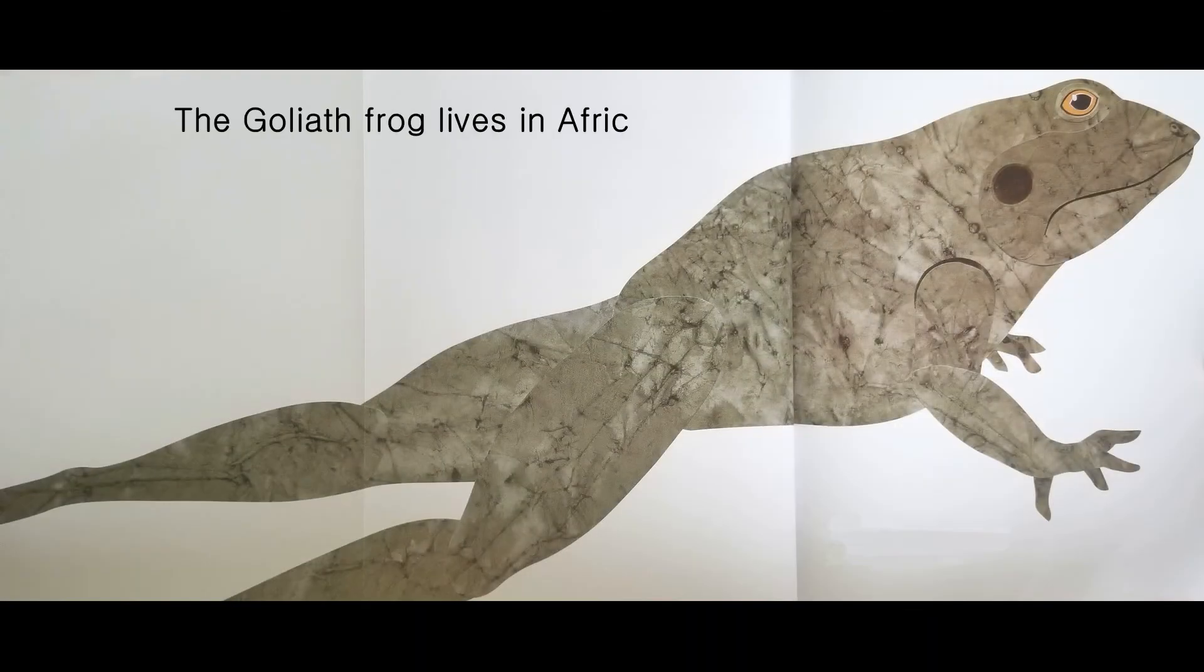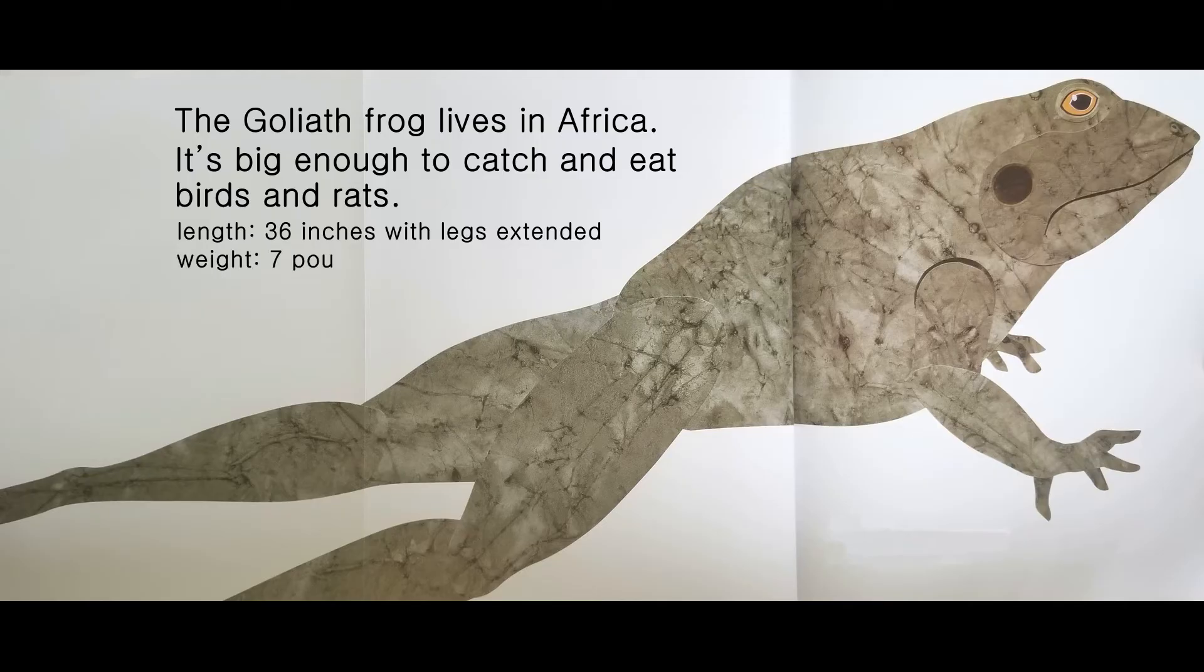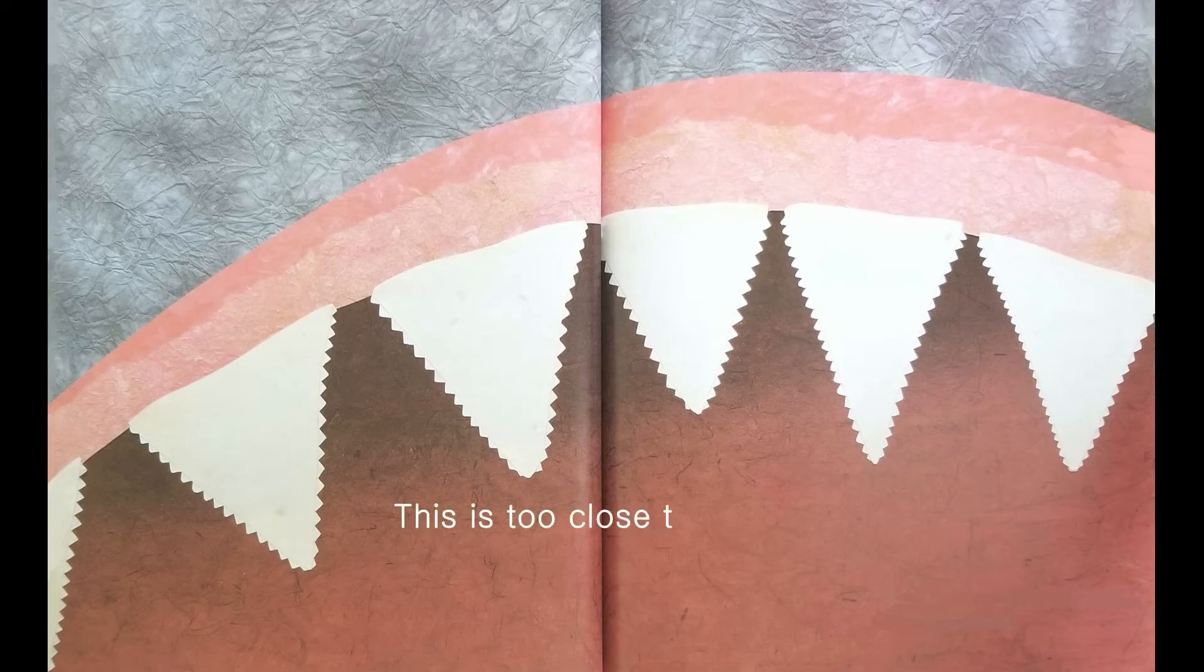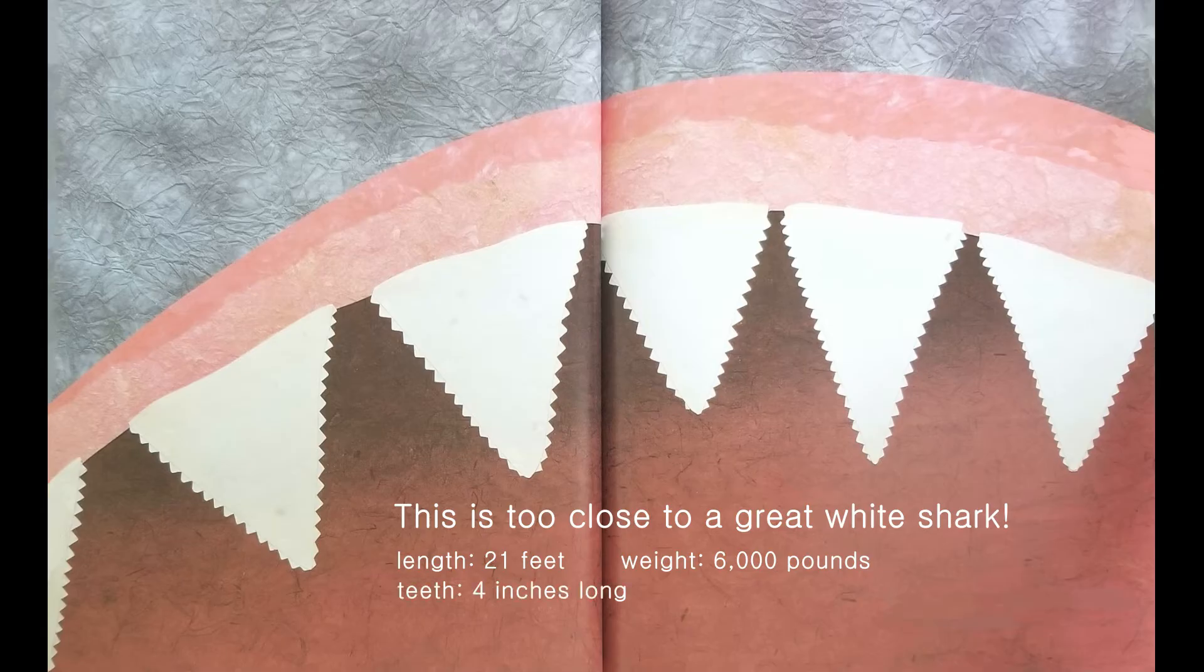The Goliath frog lives in Africa. It's big enough to catch and eat birds and rats. Length 36 inches with legs extended. Weight 7 pounds. This is too close to a great white shark. Length 21 feet. Weight 6,000 pounds. Teeth 4 inches long.